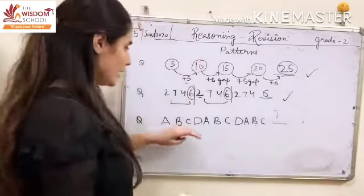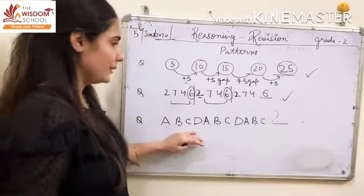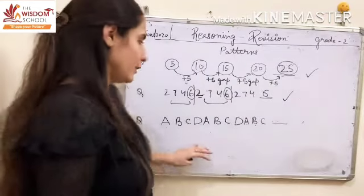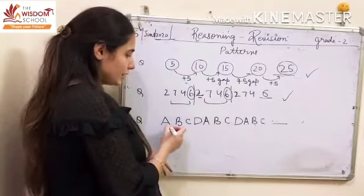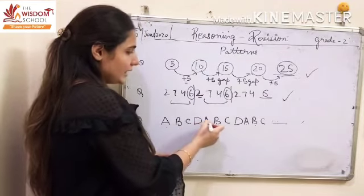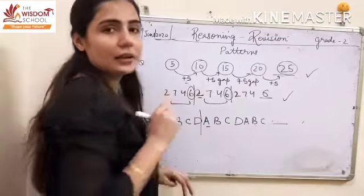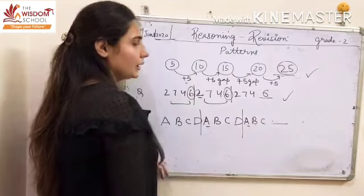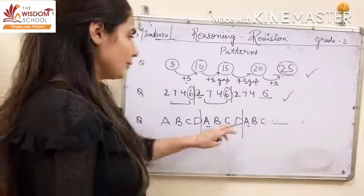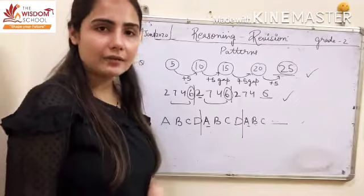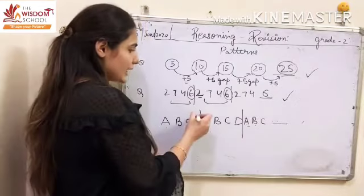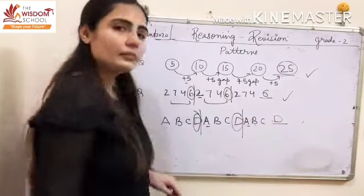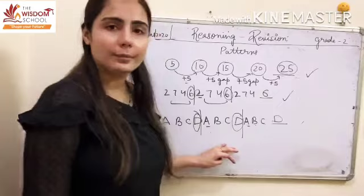Now, in patterns in alphabet, we have taken this question. Here, an alphabet series is given. You will do the same thing — check A, B, C, D. Again A is repeating, so you put a line after D. After A, B, C, D, again A is coming. So put a line. Now you see A, B, C and the next alphabet is missing. Check what comes after C in the pattern — it is D. So here you will write D. This is the complete pattern.